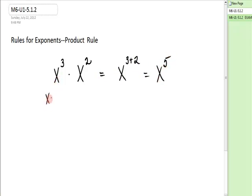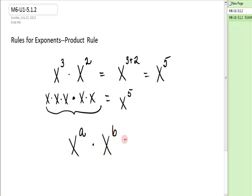x³ is x times x times x. x² is x times x. How many factors of x do you have? You have a total of five. The formal rule says if you have x^a times x^b, you get x^(a+b). That is the product rule.